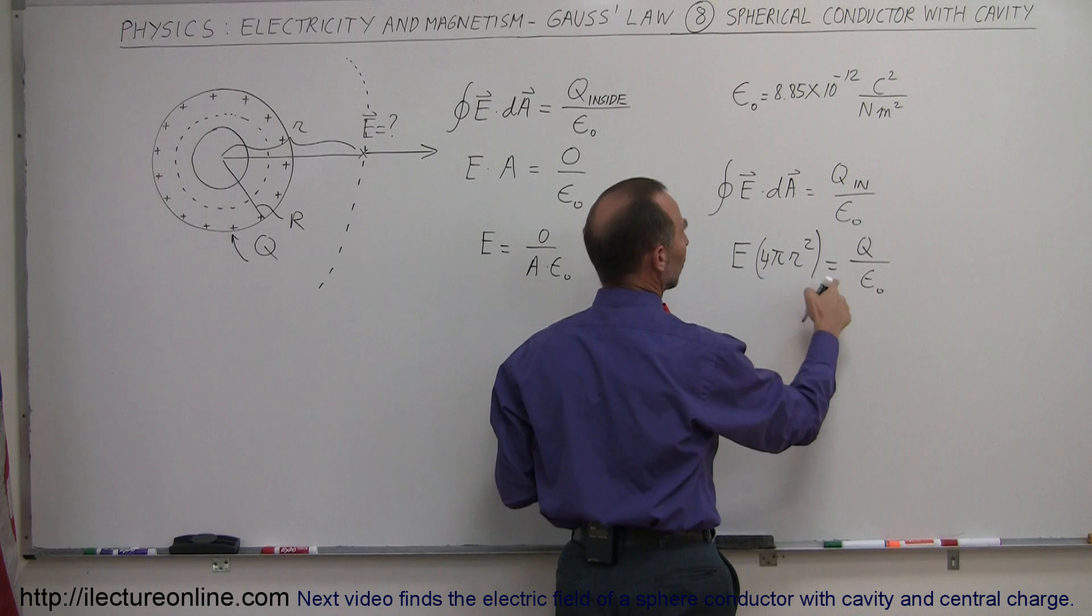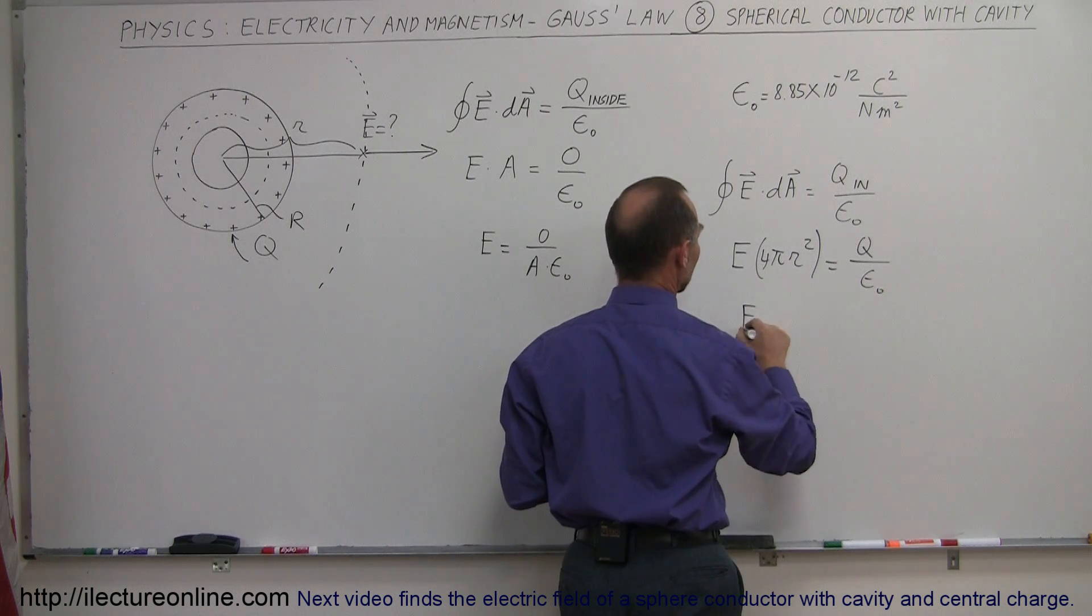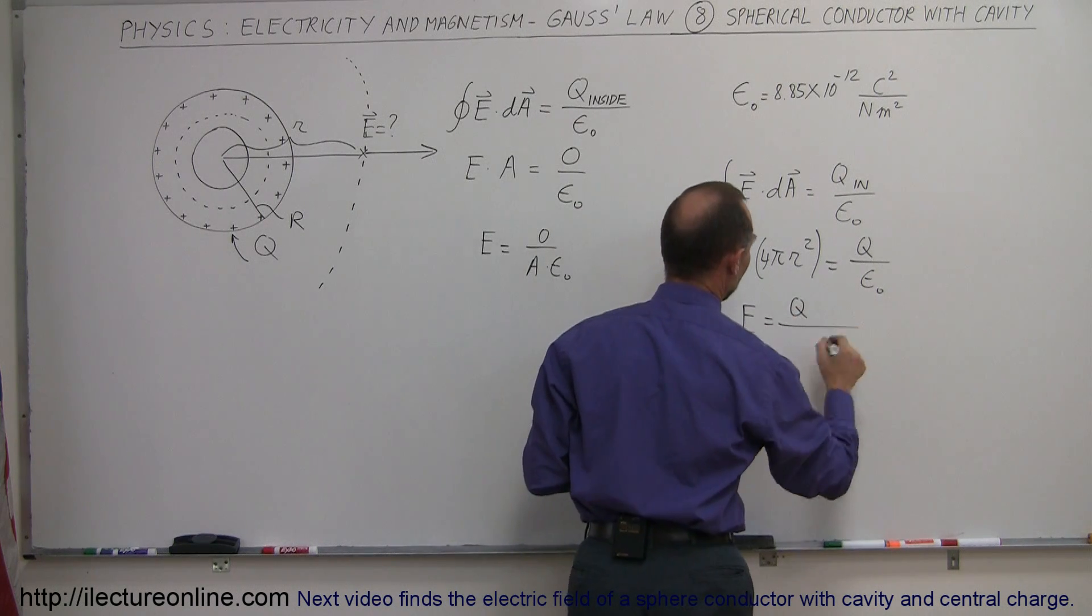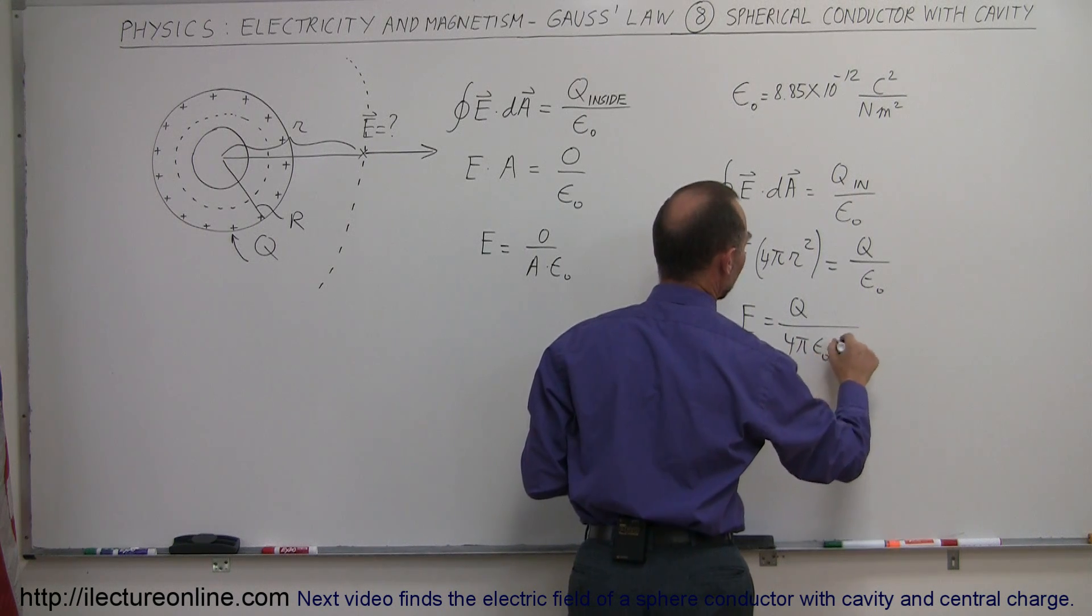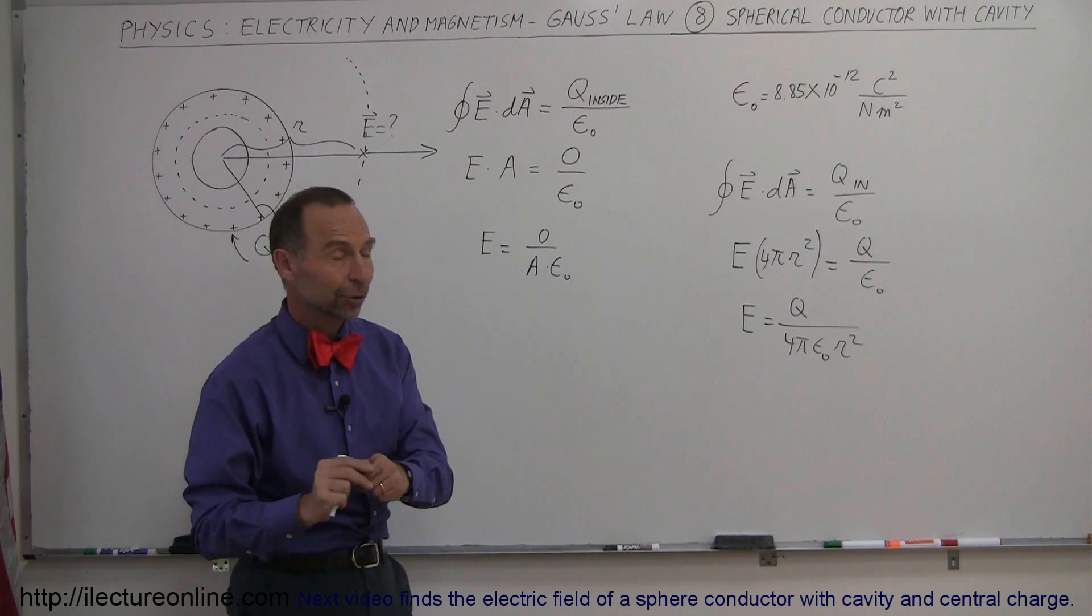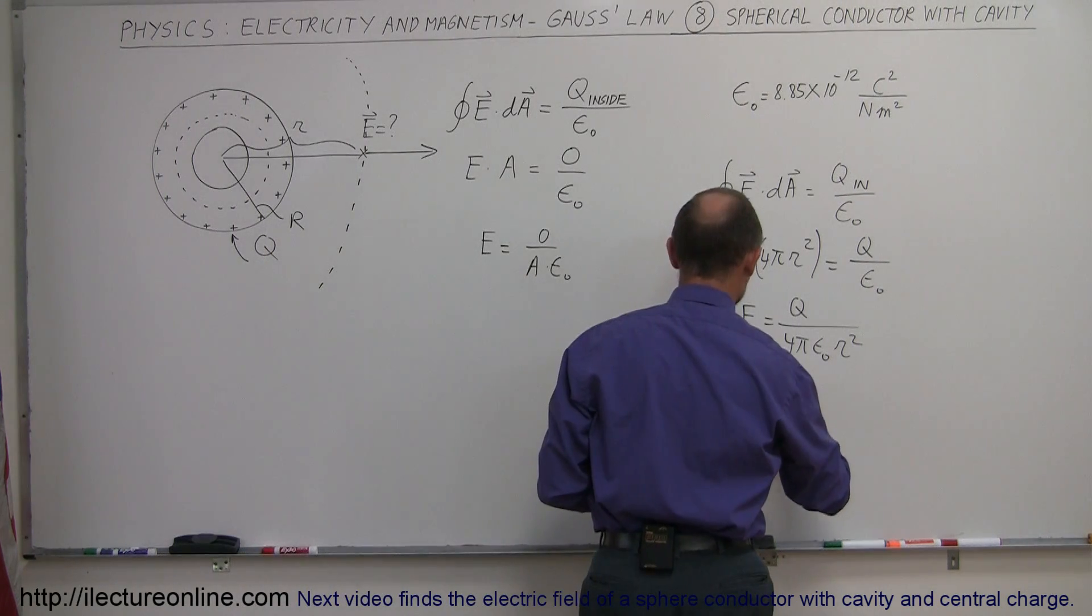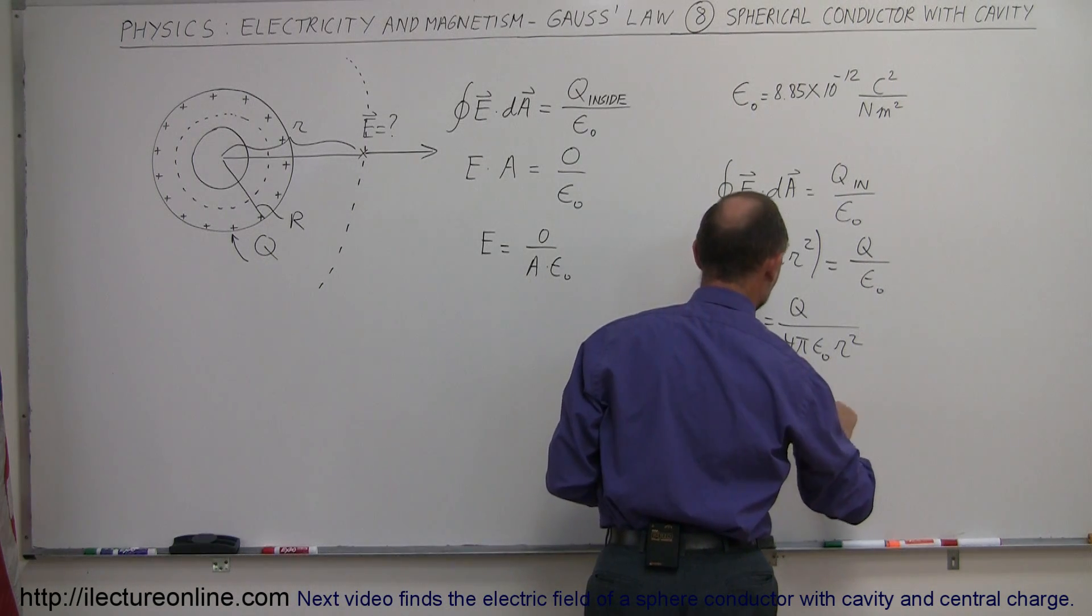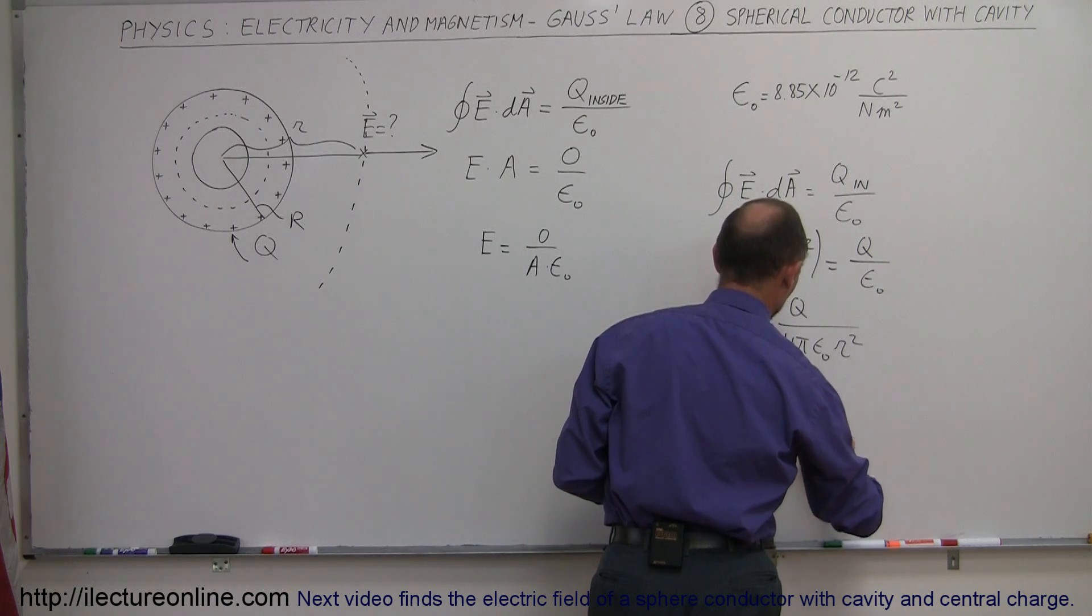Then what happens is we put this down here, we get the electric field strength is equal to Q divided by 4 pi epsilon naught times R squared. And of course, 1 over 4 pi epsilon naught, by now we all know, that's equal to K. So E equals K times Q divided by R squared.